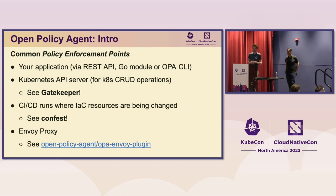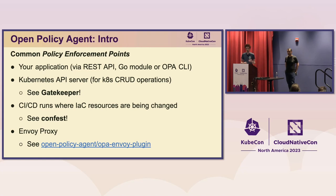Sertag is going to talk about the Gatekeeper project, which is a native OPA integration for working with the Kubernetes admission control integration. We are at KubeCon after all. You've also got ConfTest, a common tool people use in CI/CD pipelines to run policy against changes to Terraform stacks or other configuration files. And the Envoy Proxy — we have a native integration for that too.